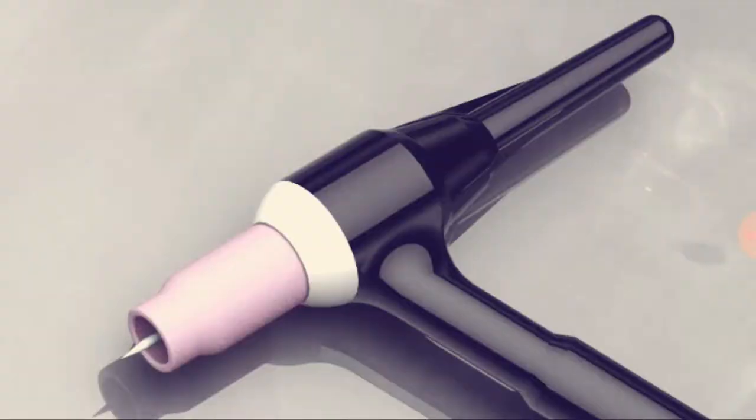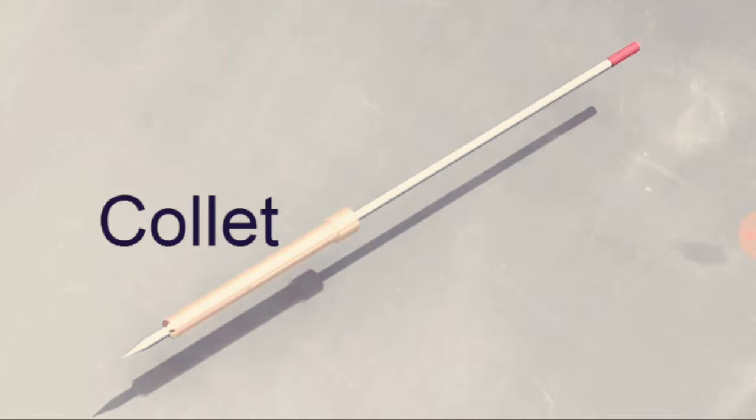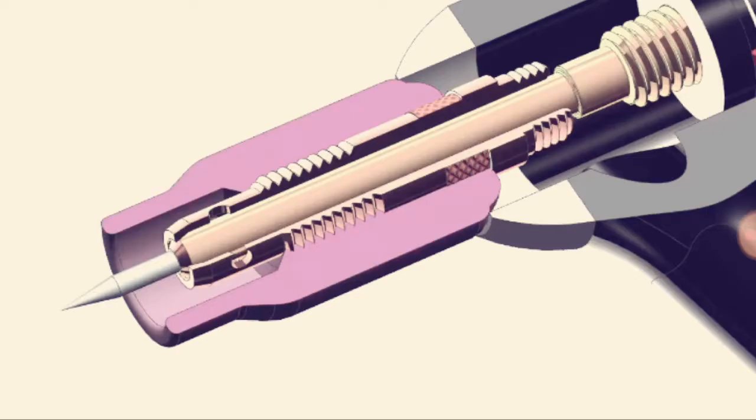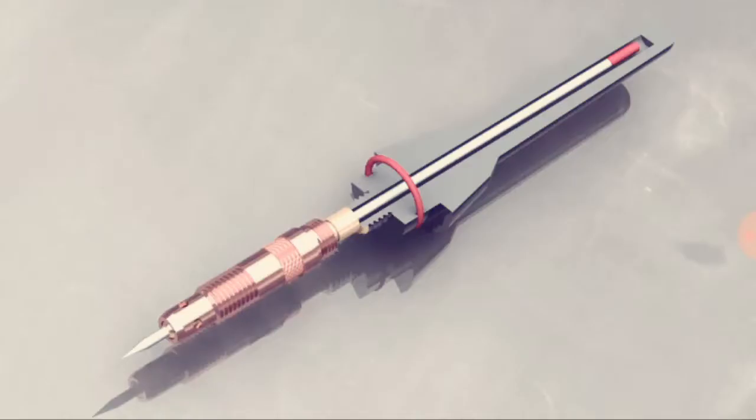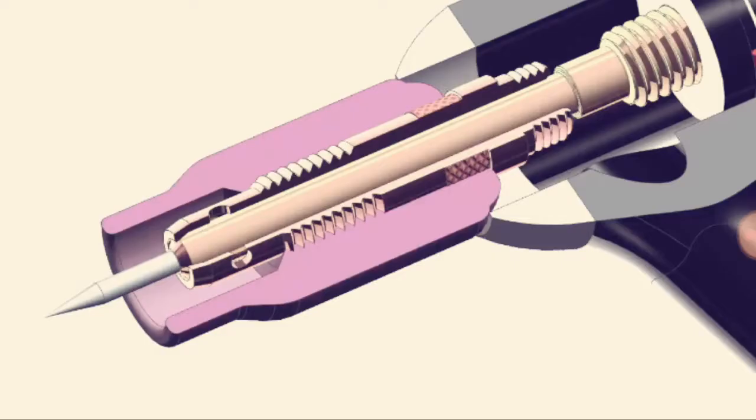So here's the tungsten electrode being held in a TIG torch. The electrode slips into a collet, and the collet tightens up against the collet body. You can adjust the length that the electrode sticks out of the holder by loosening up the end cap. When you tighten the end cap, the collet clamps down on the electrode.